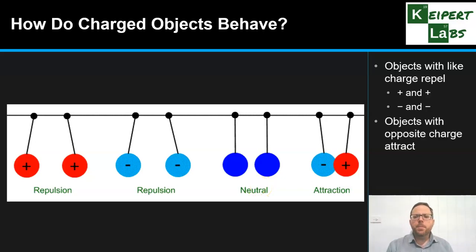Whereas, if we have objects that have opposite charge, we can see that they're going to attract towards one another. So, they're going to pull towards each other because these opposite charges will attract one another.